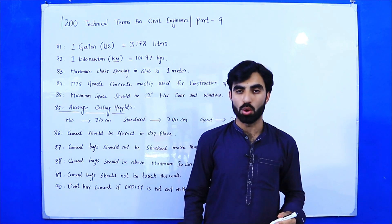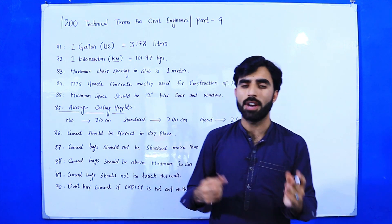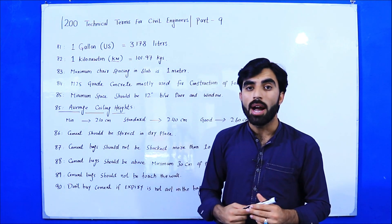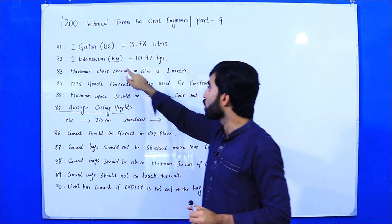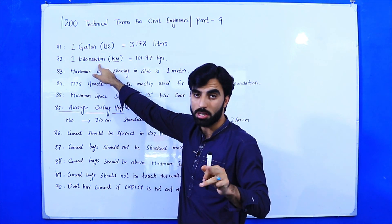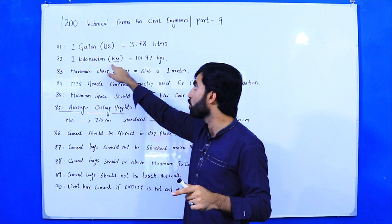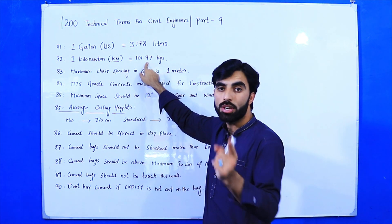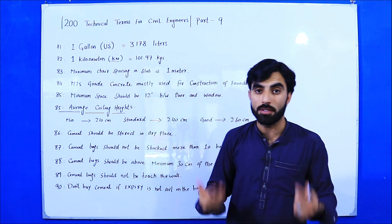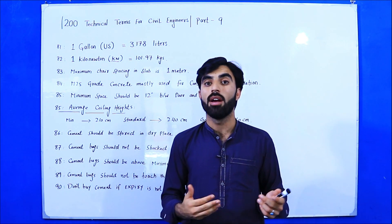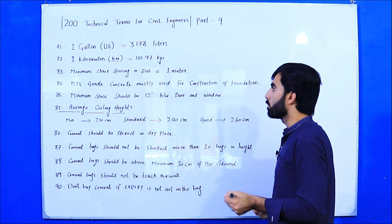Term number 82: Kilonewton. As you know, when we discuss loads on columns, beams, or RCC structures, we use values like 200 kilonewtons or 500 kilonewtons. In interviews, they can ask how many kilograms are in one kilonewton. One kilonewton is equal to 101.97 kg. For example, if there are 200 kilonewtons, multiply 200 by 101.97 to get the load in kg.